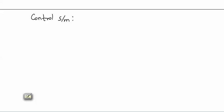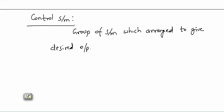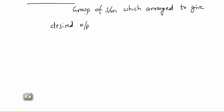What is a control system? A control system is nothing but a group of system components which are arranged to give a desired output. This is very important — it gives desired output, not just any output.